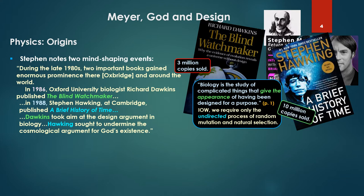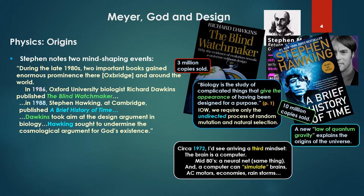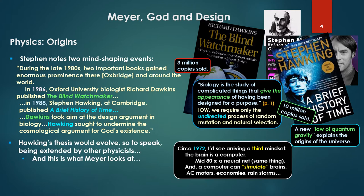Hawking was going to explain the origin of the universe—a new law of quantum gravity explains the origin. But before all this, I'd see having arrived the third mindset, namely the brain is a computer. In the mid-1980s, it's a neural net, which is the same thing—computational. A computer can simulate brains, AC motors, economies, rainstorms—the embodiment of the classic metaphysic. Hawking's thesis would evolve, extended by other physicists, and this is what Meyer looks at.